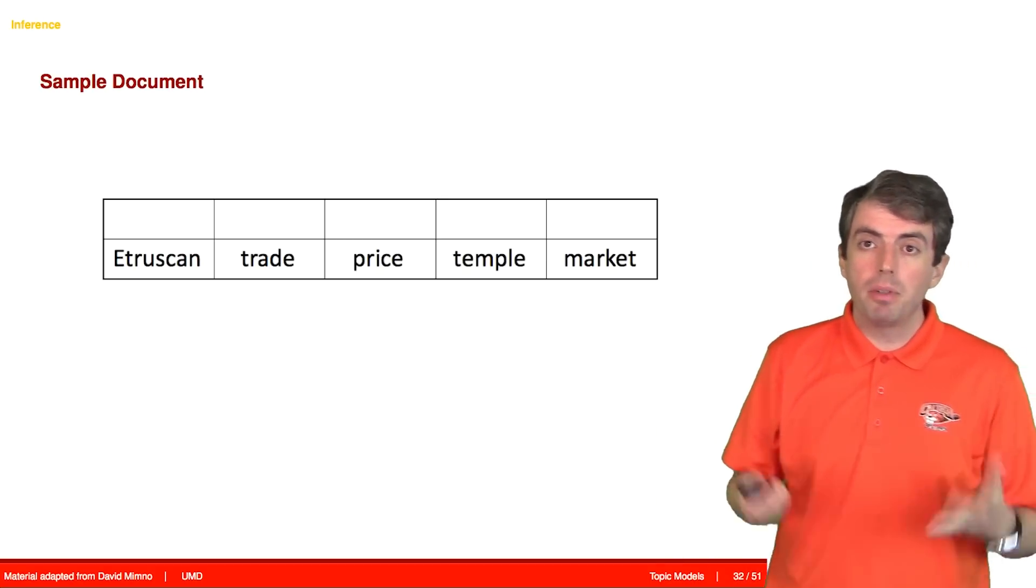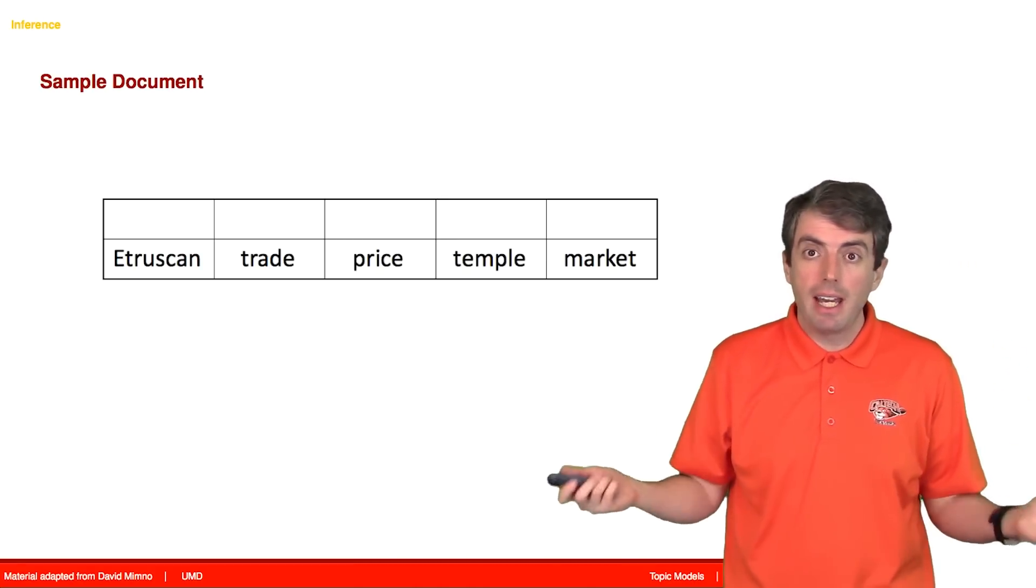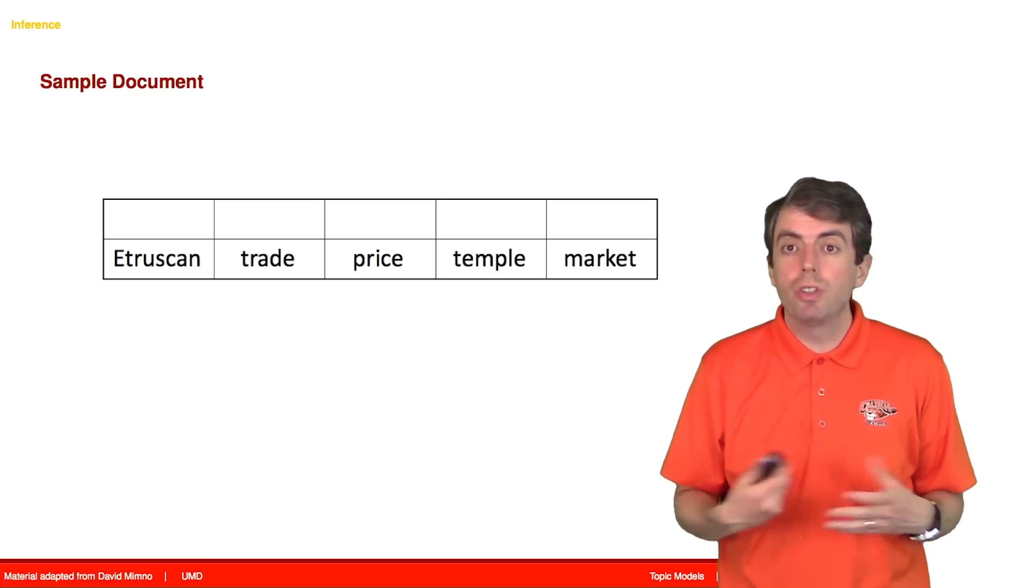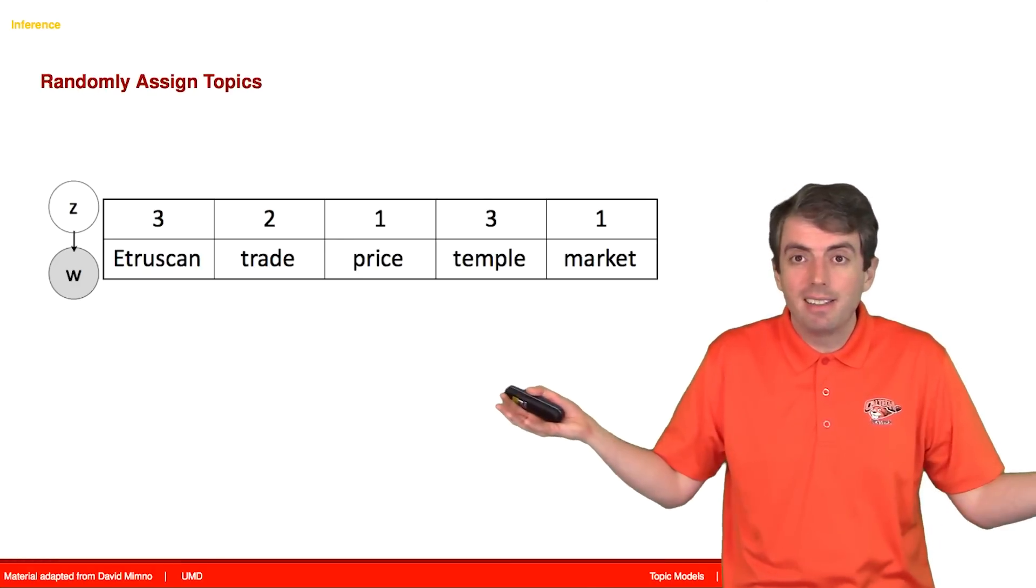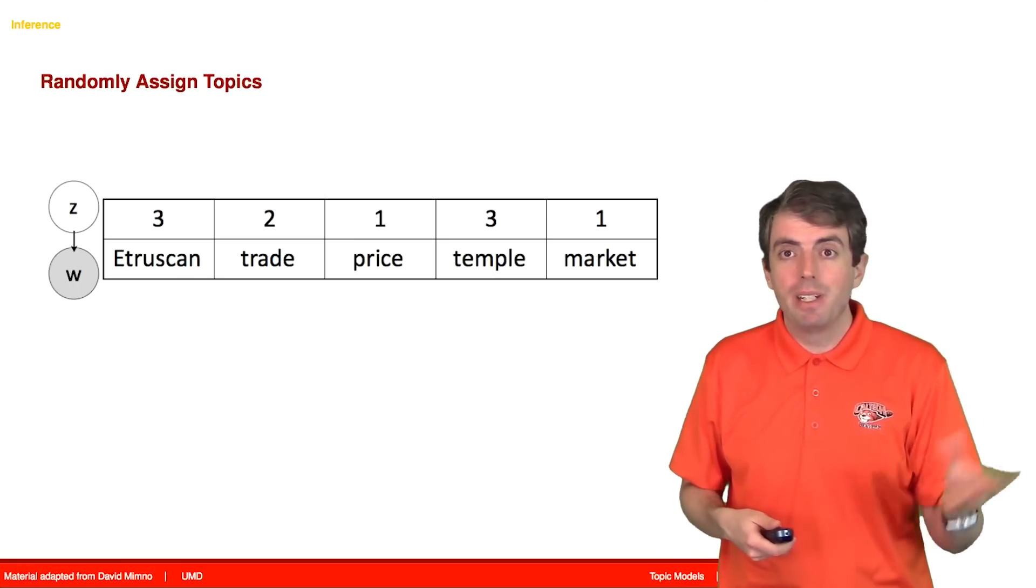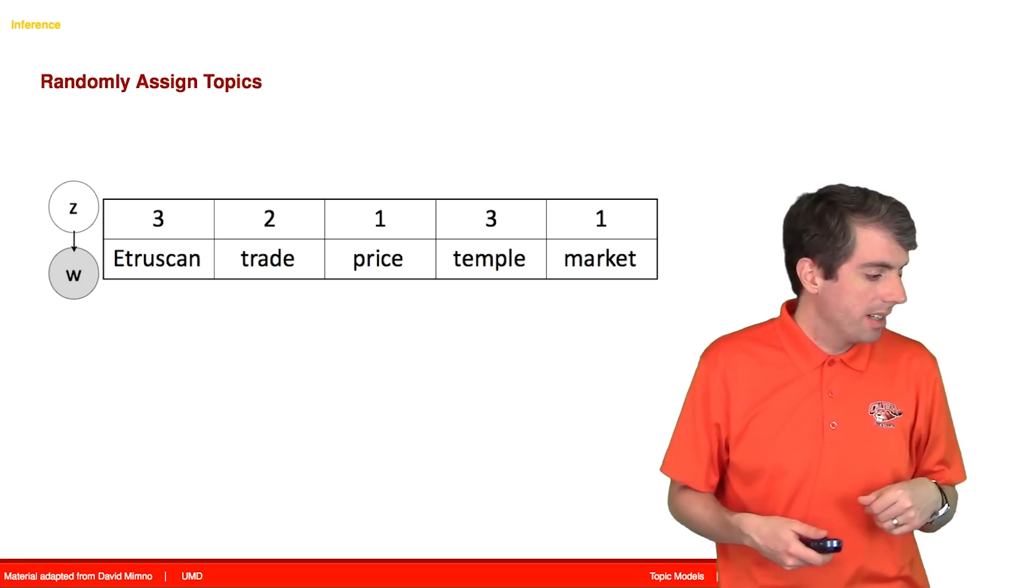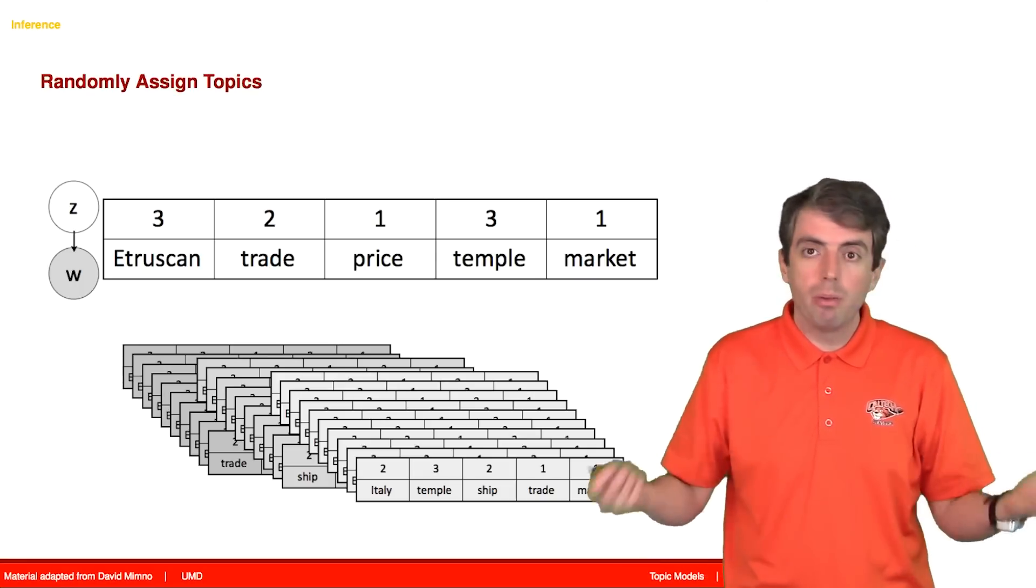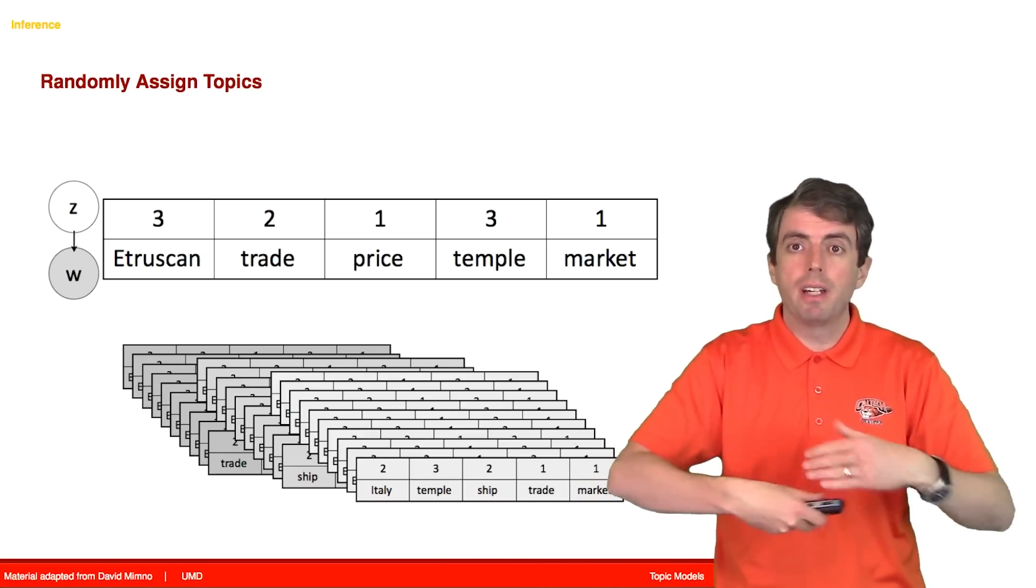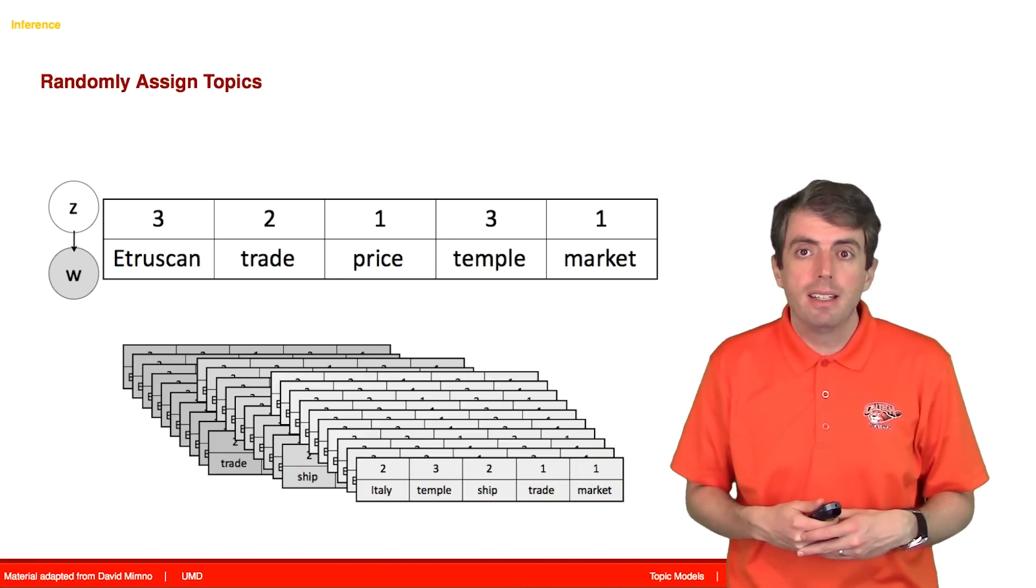So now let's go through an example that I have stolen from David Mimno. So let's say that we have a document, and we're just going to assume that we have some topic assignments. Let's say that we generate them randomly. So we take a k-sided die, we roll it, and we generate all of these topic assignments. And we do that for every word and every document, and now we've done that for the entire corpus, and now let's try to make it better doing Gibbs sampling.